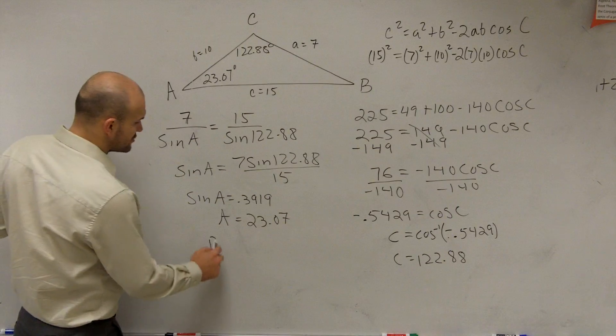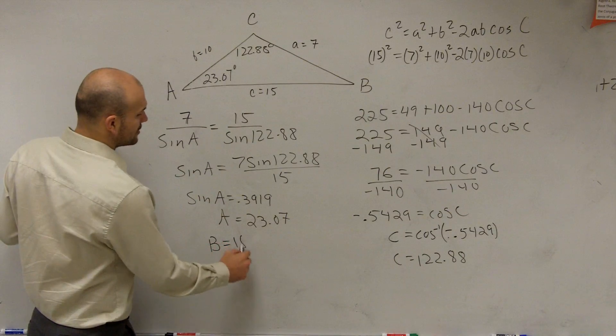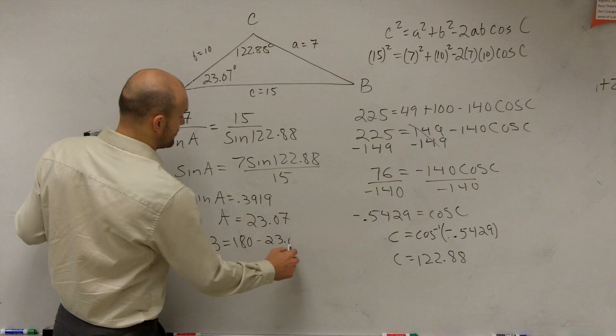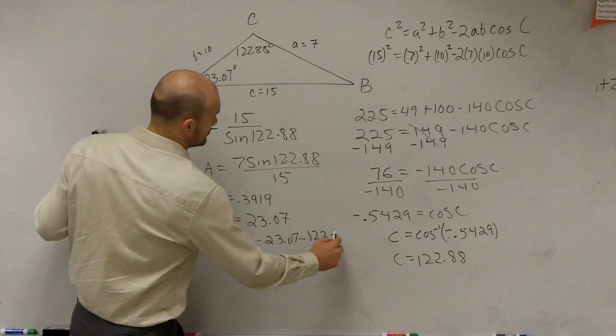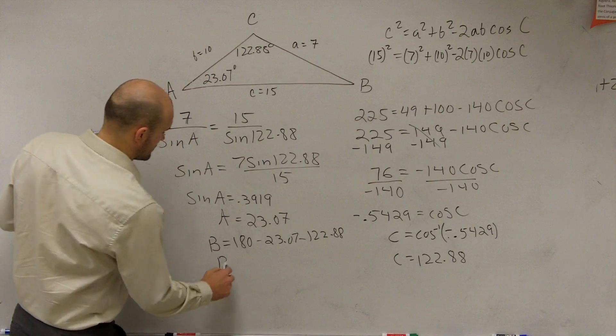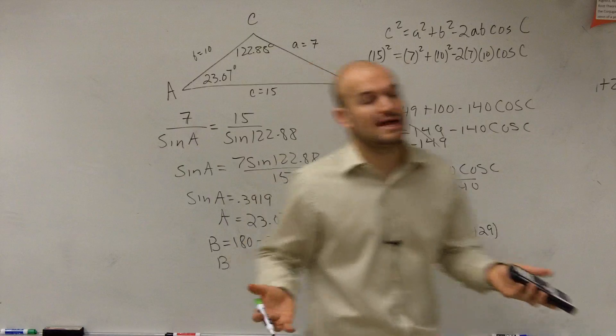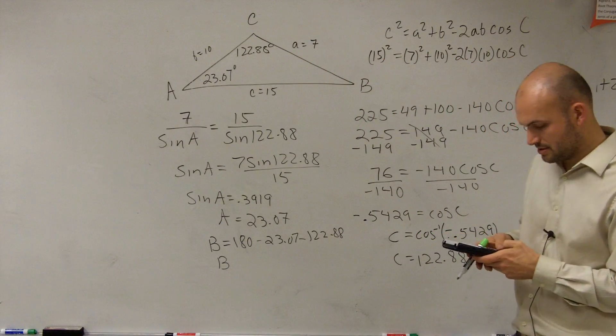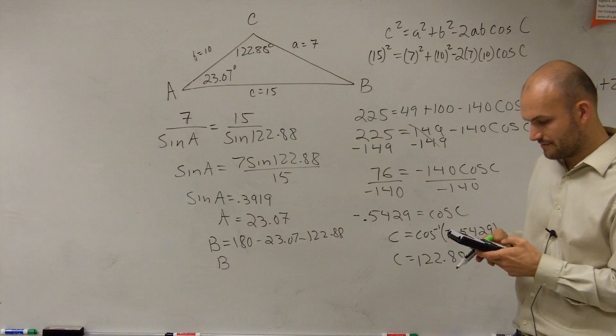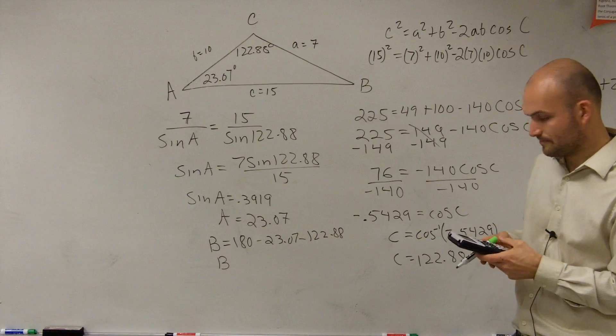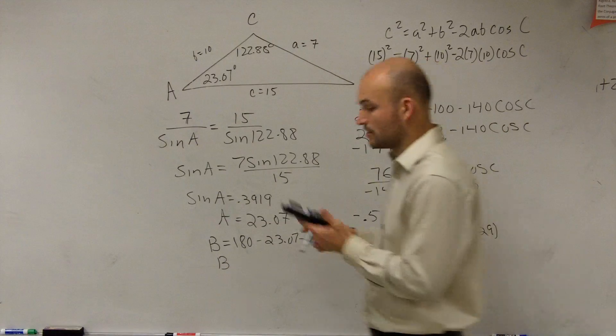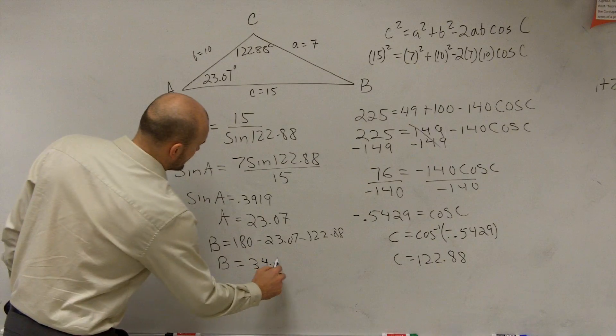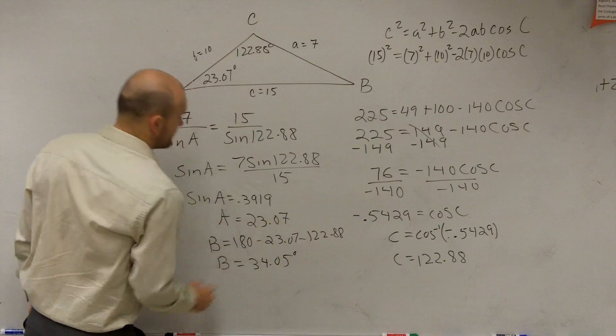So now that we know those two angles, I can use the triangle angle sum theorem, which B is going to now equal 180 minus 23.07 minus 122.88. So because remember, all angles in a triangle add up to 180. So now I can just do 180 minus 23.07 minus 122.88. And we can say it's 34.05. So B equals 34.05 degrees.